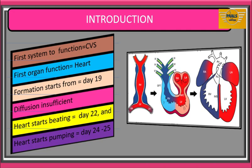The first system to start functioning in the embryo is the cardiovascular system, and the first organ to start functioning is the heart. Heart formation begins in the middle of the third week, around day 19 of intrauterine life, because diffusion alone can no longer meet the nutritional requirements and waste disposal needs of the embryo. The heart begins beating as early as day 22 and starts pumping blood by days 24 to 25, continuing to develop even while pumping blood.